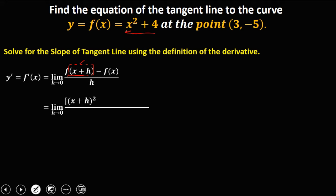From the given x squared plus 4, we have the limit as h approaches 0. Since x is equal to x plus h, substitute into x. So we have x plus h, squared, then plus 4, minus the second term f of x. Since f of x is the given, that's minus x squared plus 4, then over h. Then simplify.